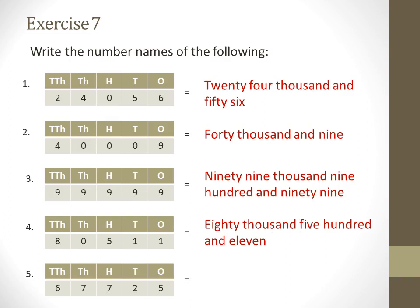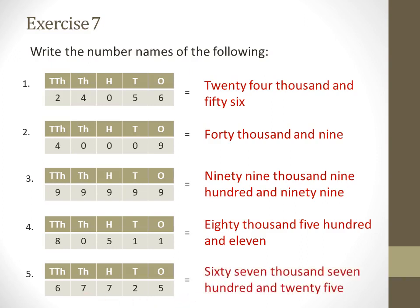This is the last example: 6, 7, 7, 2, 5. Starting from the left, under the thousands period we have 67, so how many thousands? 67,000. Next, under the hundreds section we have 7, so 700. Then lastly we have 25. So the number name is sixty-seven thousand seven hundred and twenty-five — 67,725.